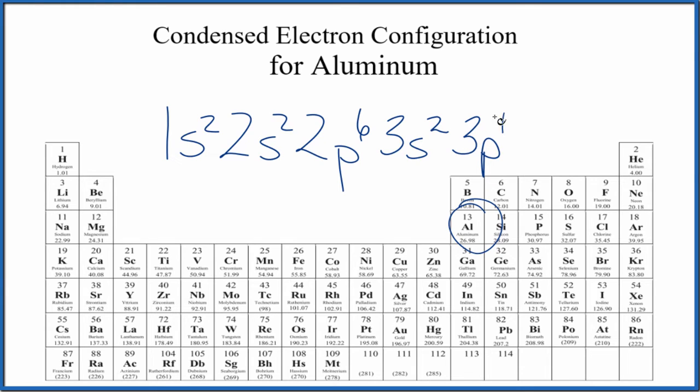When we condense electron configurations, what we want to do is have the highest energy level written out and the lower energy levels, we just want to condense those together.